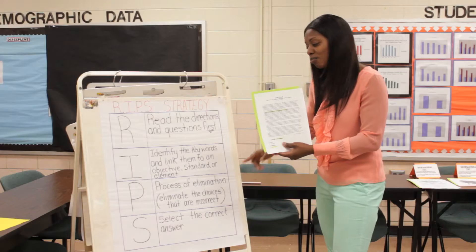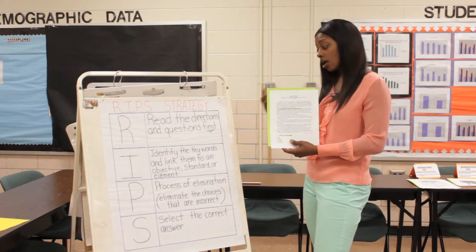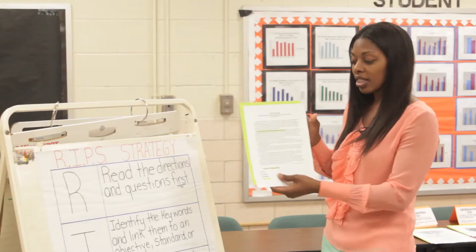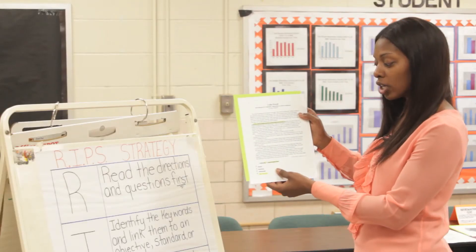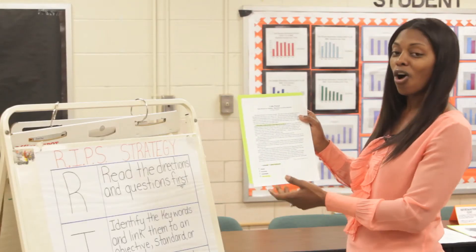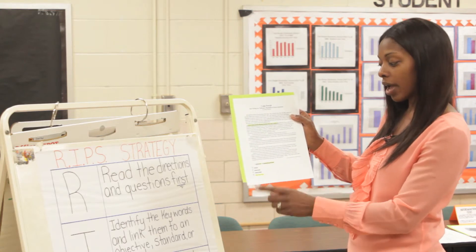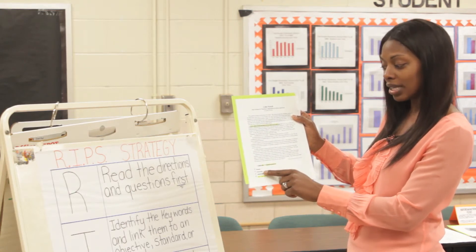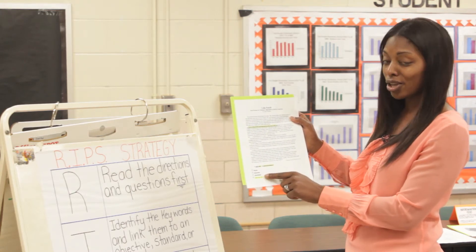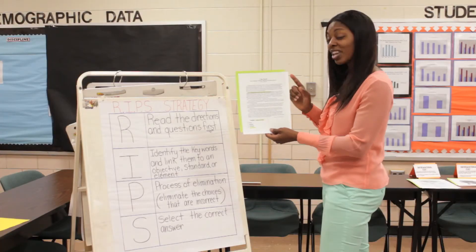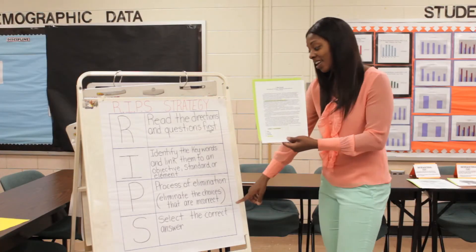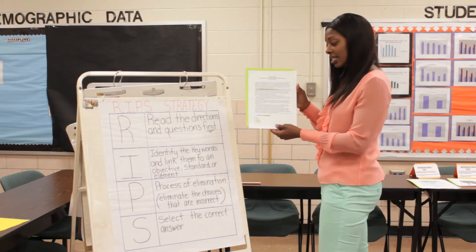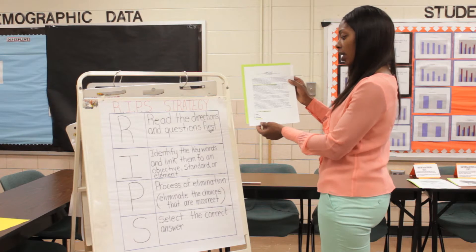I can now proceed to P, which tells me process of elimination. This is where I'm going to eliminate all of the answers that I know are incorrect. I know he wasn't born in Boston, Cincinnati, or Philadelphia. So it leaves me with my correct answer, which is S — select the correct answer.